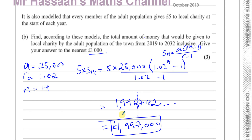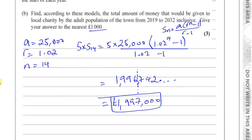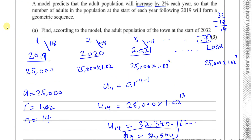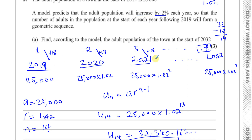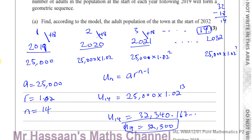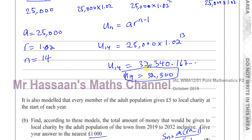A lot of people get mixed up with the power. A neat way to work out which term you're on is to note the pattern: term 1 is 2019, term 2 is 2020. So 2032 is 14th. Always read the question carefully for rounding instructions — here part A required 3 significant figures giving 32,300, and part B required rounding to the nearest £1,000 giving £1,997,000.